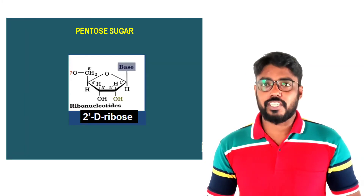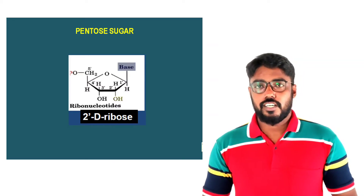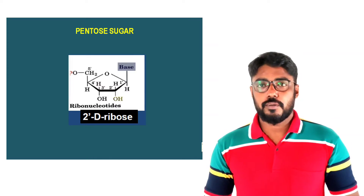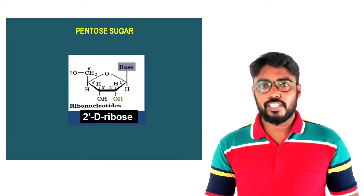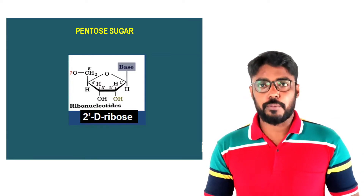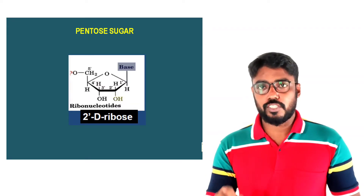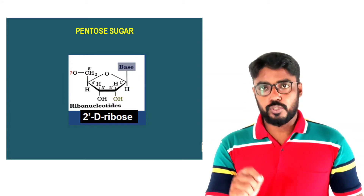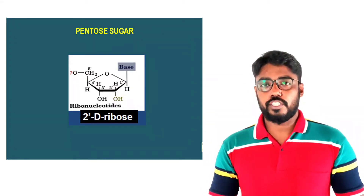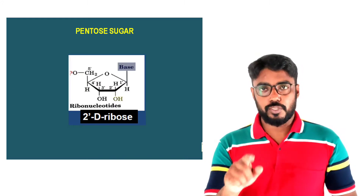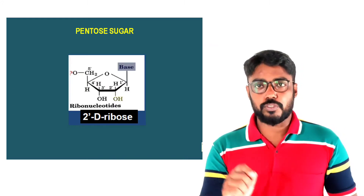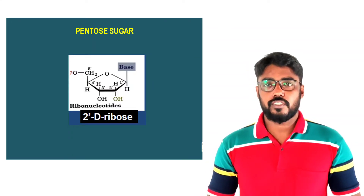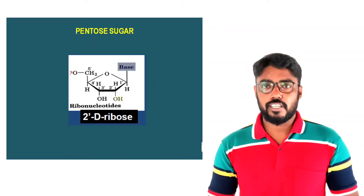The pentose sugar present in RNA is D-ribose. But in the case of DNA, it is 2'-deoxyribose, because the second position hydroxyl group is removed in the DNA pentose sugar. In RNA, the second position hydroxyl group is not removed, which is why it is called D-ribose.